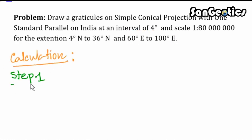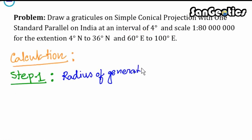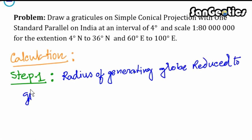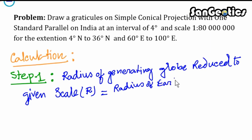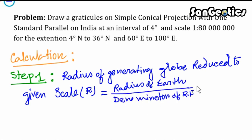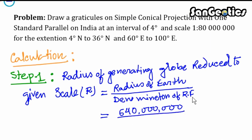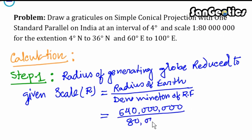Step 1: Radius of the generating globe reduced to the given scale. R equals radius of Earth divided by denominator of RF. Earth's radius is 6,400,000,000 cm divided by 80,000,000, which equals 8 cm.